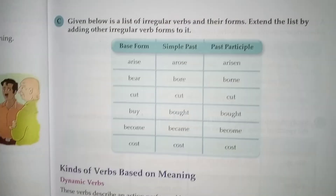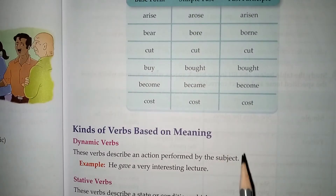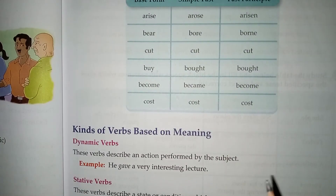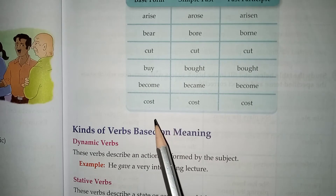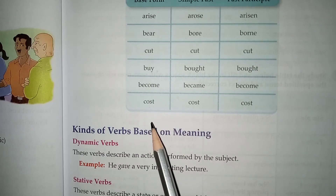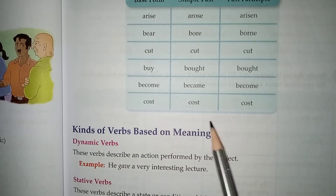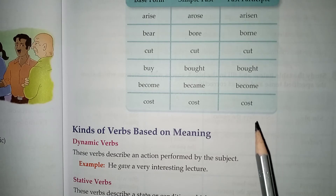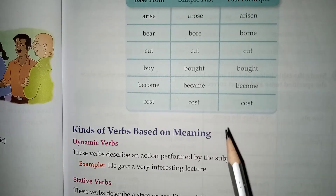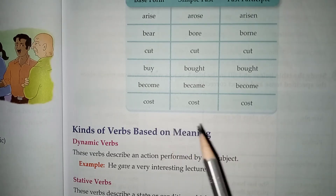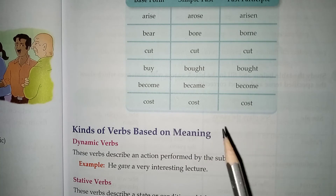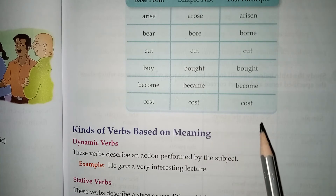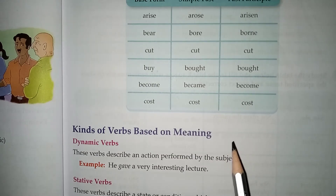You can add more verbs to this list. For example: go, went, gone; do, did, done. There are many verbs whose past and past participle forms change in this way.